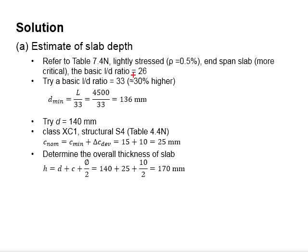Provide 30% higher allowance for the L/D ratio. You will get L/D ratio as 33. With that, the minimum depth of the beam is estimated to be 136 mm. Let us try to use d equals to 140.